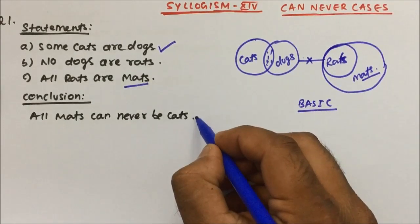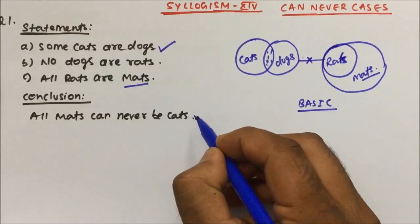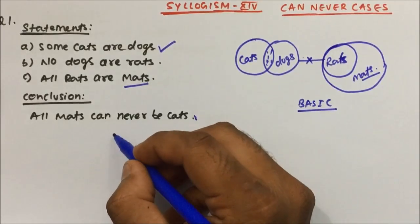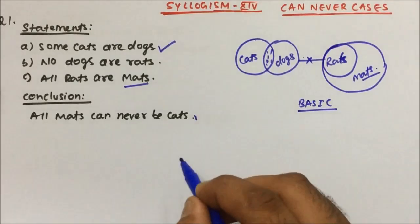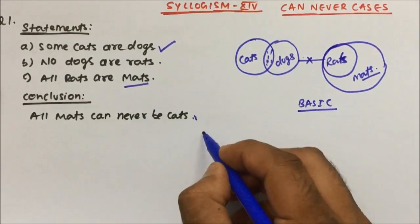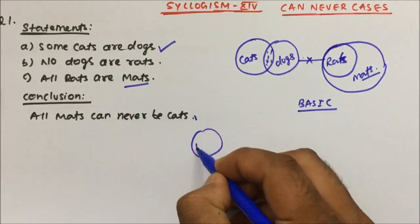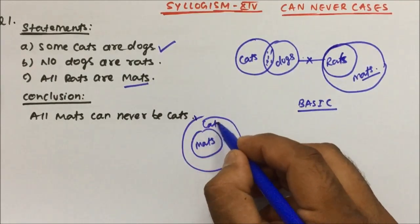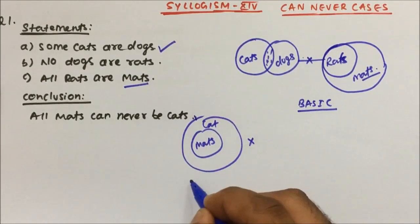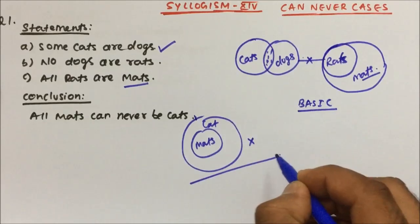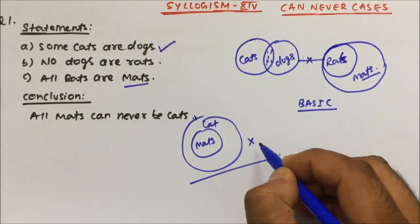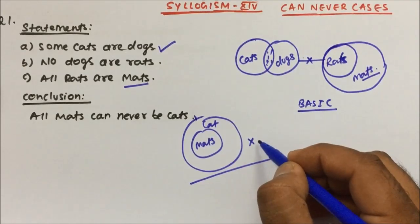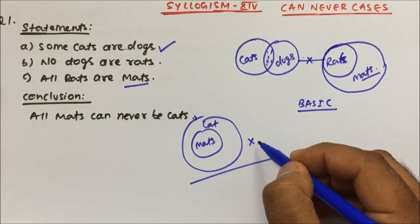Now the conclusion is: all mats can never be cats. What they want to say is that all the mats will never be cats — meaning all the mats will never come inside the cats. They are asking if this is true or false. We will go to our basic diagram and then try to make this happen.